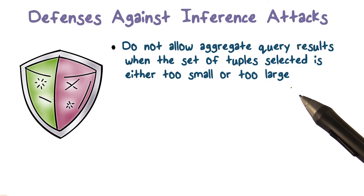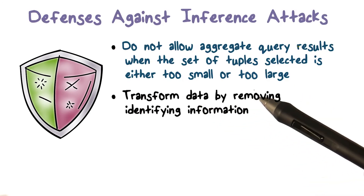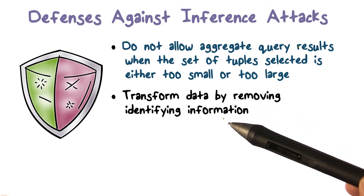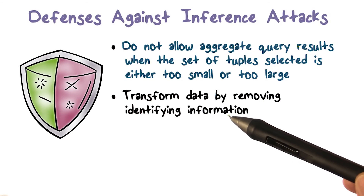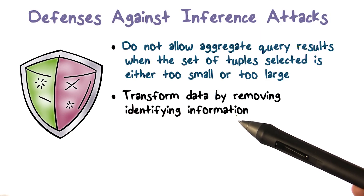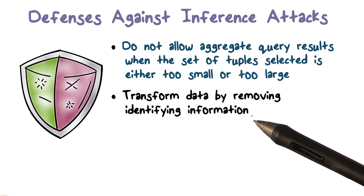That's one way to address this. The other defense we typically use is transforming the data — the database — and removing all the identifying information. Think about the exam score example: we drop the student ID and standing, even if you're concerned about too few students with a certain standing. Then we're just posting the exam score without the names or the IDs.